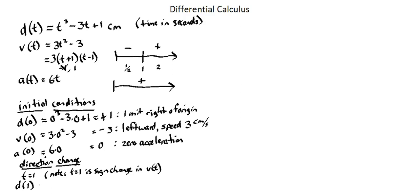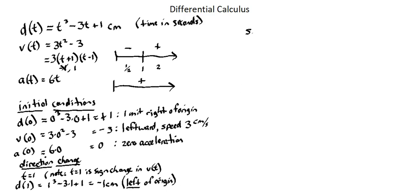With a displacement input value of 1, we get 1 to the power of 3 minus 3 times 1 plus 1, which equals 1 minus 3 plus 1, or negative 1 centimeters. Since this is negative, I'm left of the origin — 1 centimeter left of the origin.